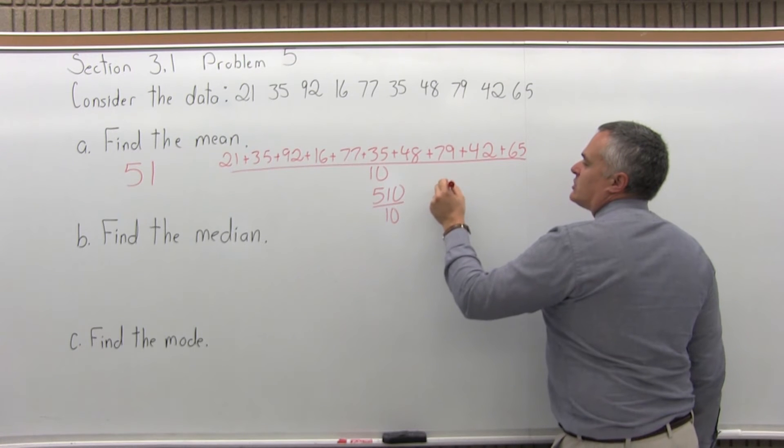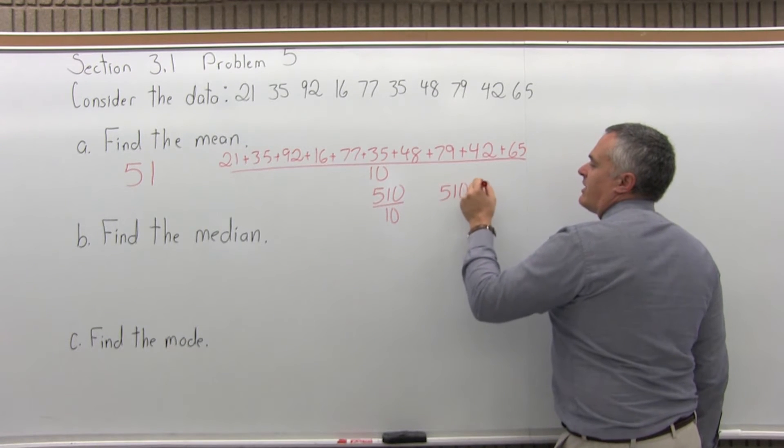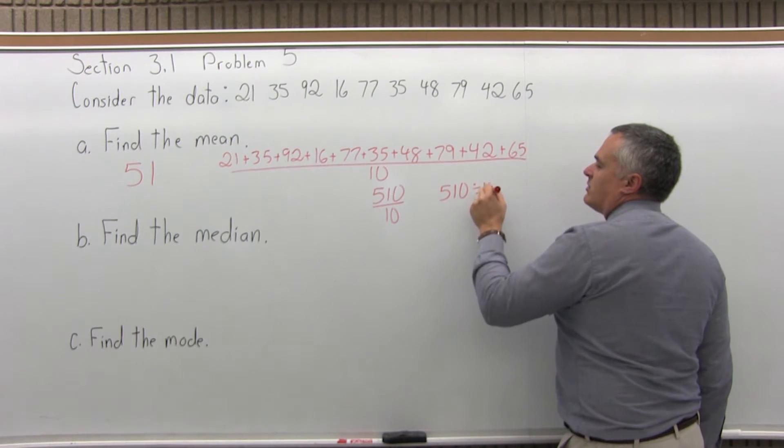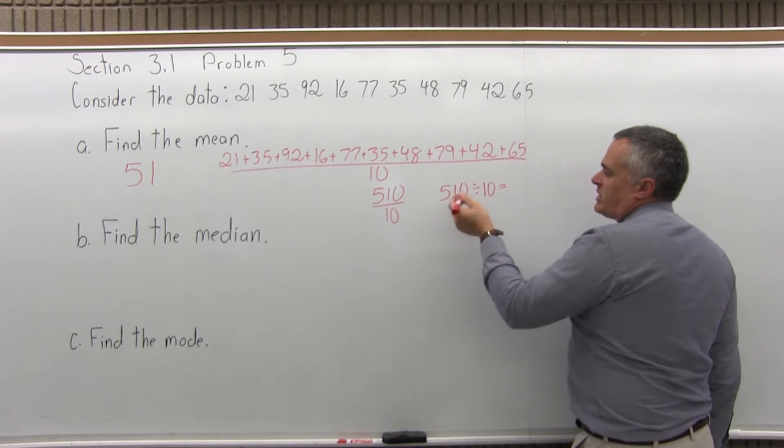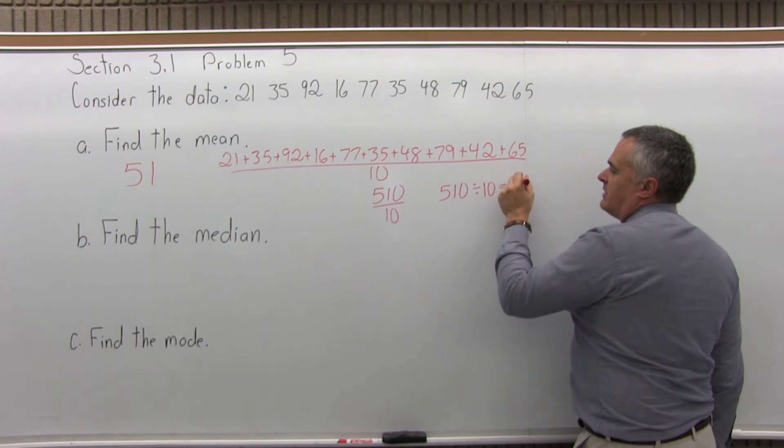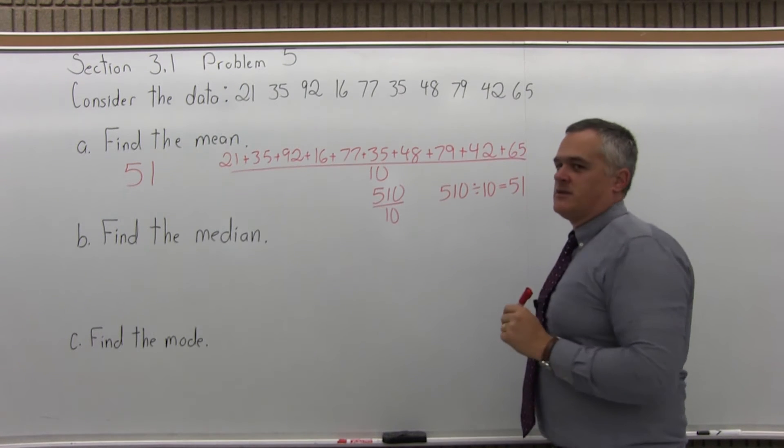By all means, it takes only a second to verify that with your calculator. If you don't feel comfortable that you could do that, just with your calculator, the top 510 divided by the bottom 10, and it will tell you very quickly that it's 51.